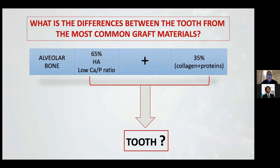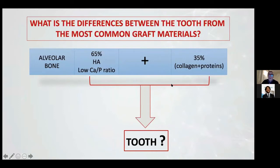Why does this osteoinduction happen? Because inside the alveolar bone, for example, the bone is able to have osteoinduction. We have 65% of HA plus 35% collagen and proteins. This part — the proteins — is able to stimulate the new bone.